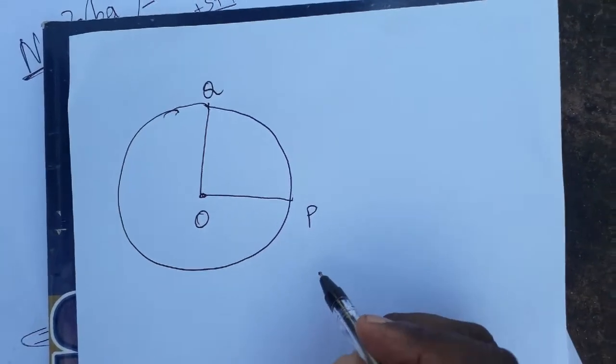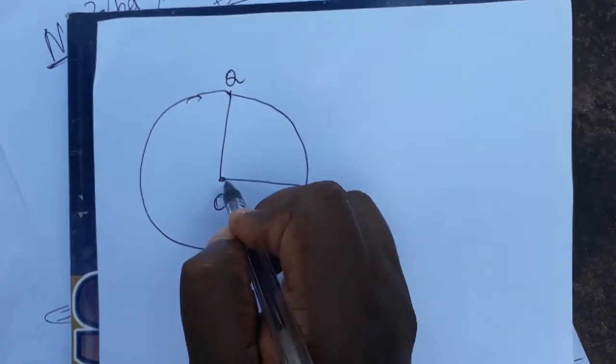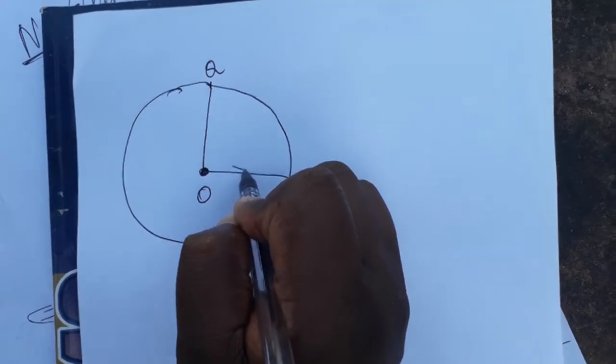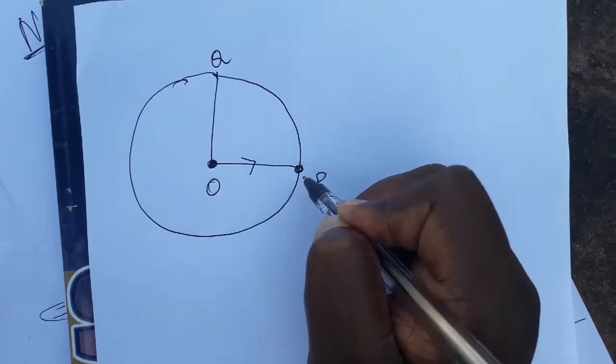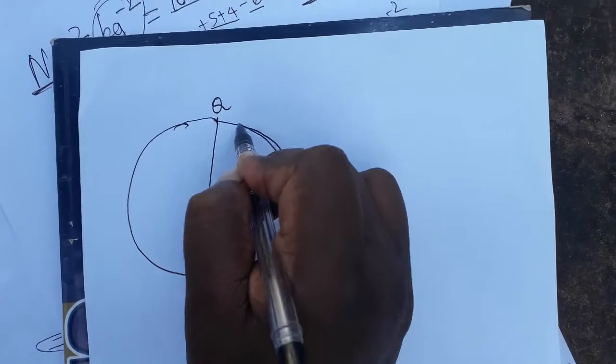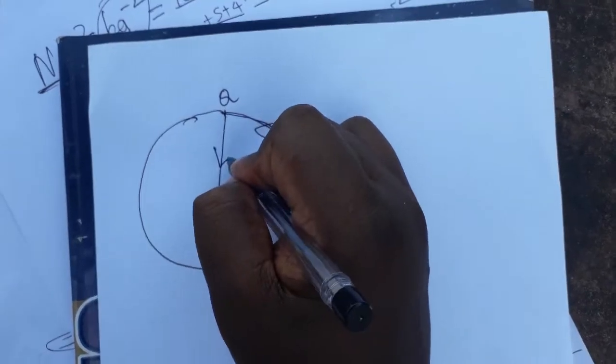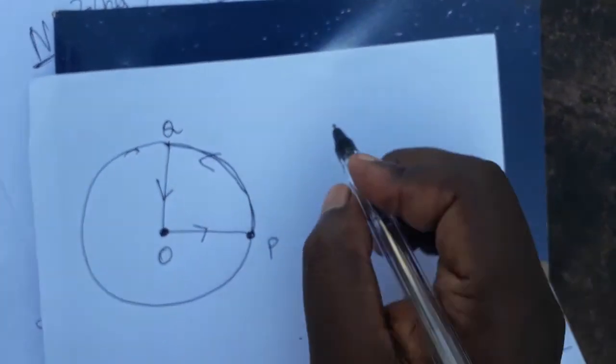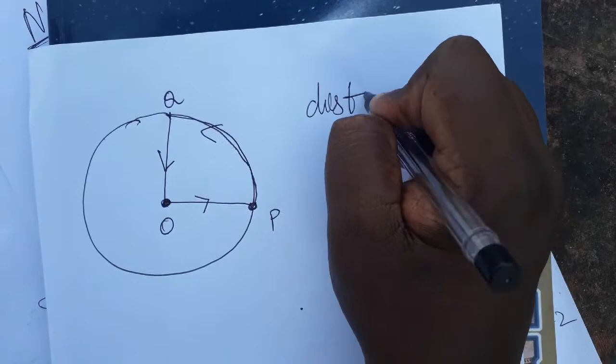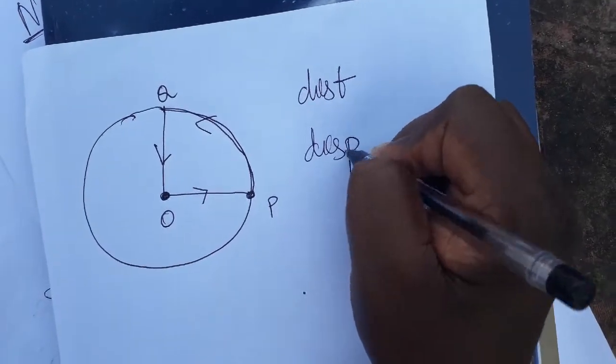Hello friends, from this circle we are going to learn what is distance and displacement. The object started from O, went to P, then went to Q, and again came to O.